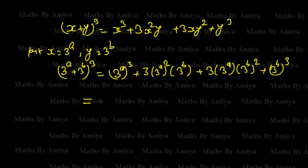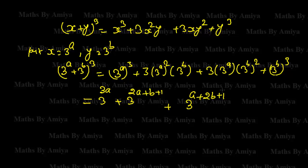Setting x = 3^a and y = 3^b in the expression, we can say (3^a + 3^b)³ is a perfect cube, and the expression expands to 3^(3a) + 3^(2a+b+1) + 3^(a+2b+1) + 3^(3b).